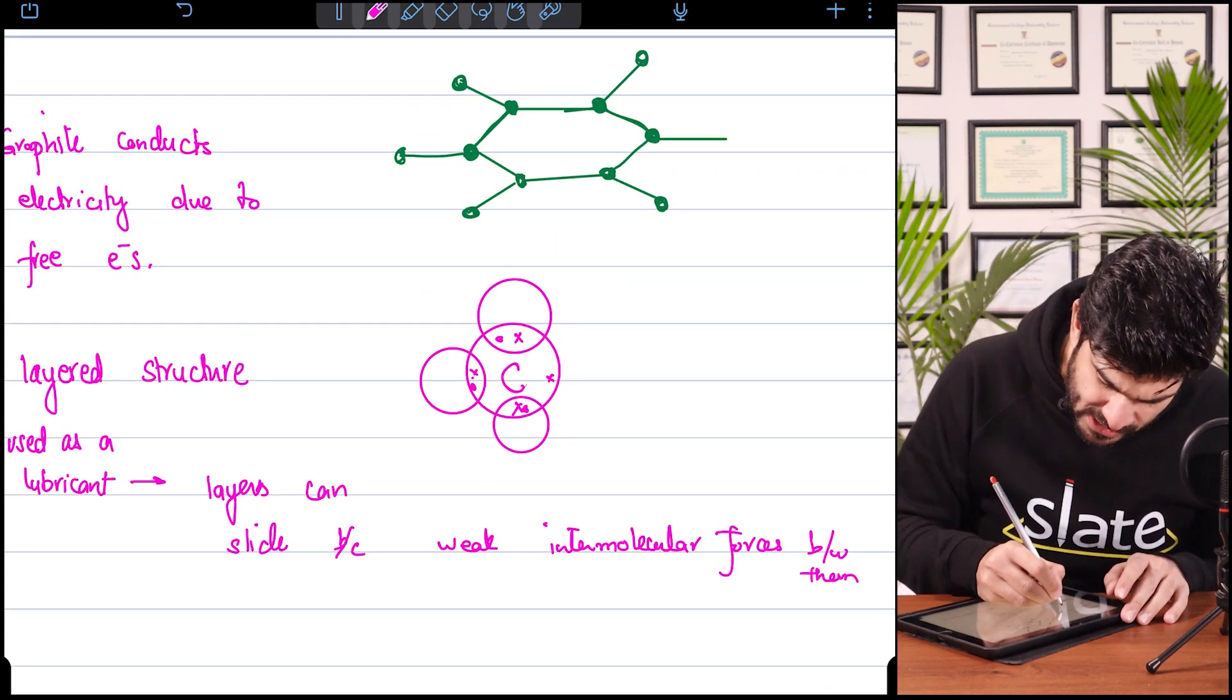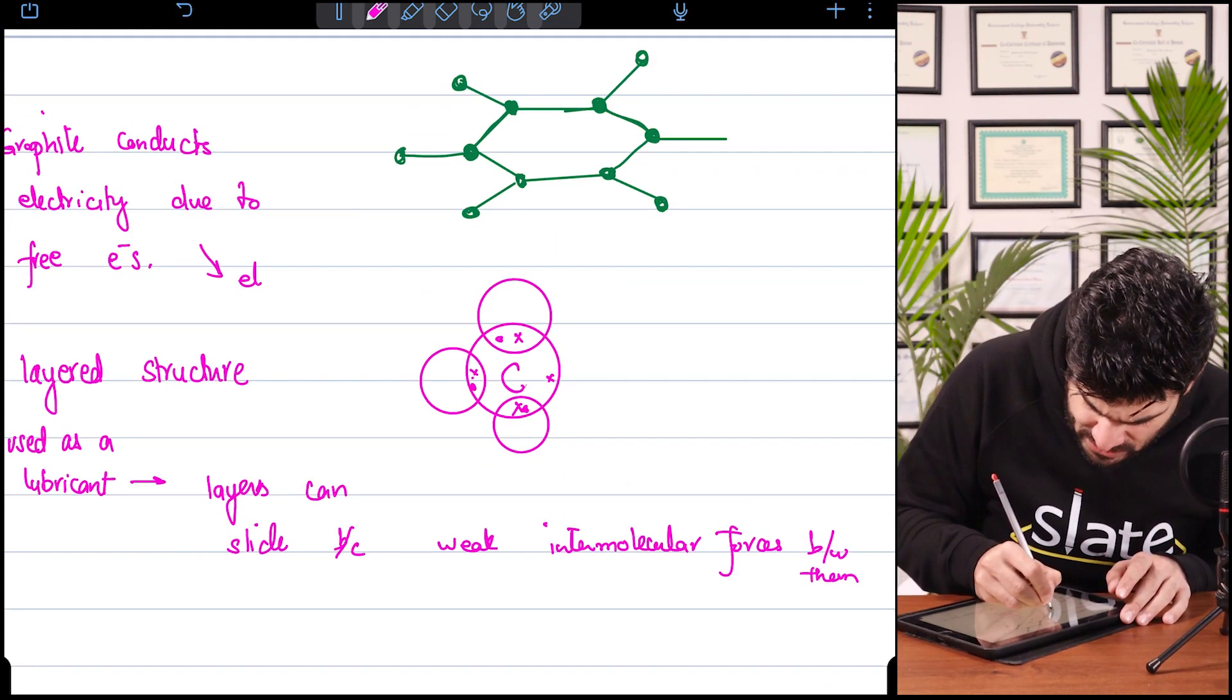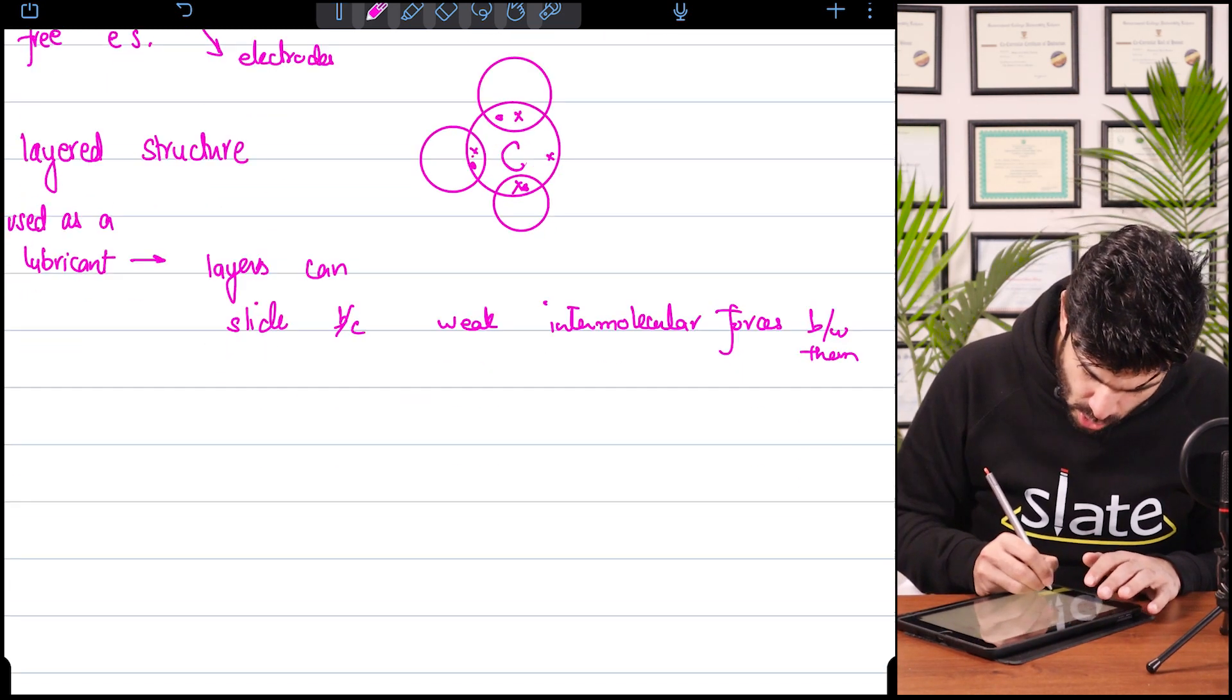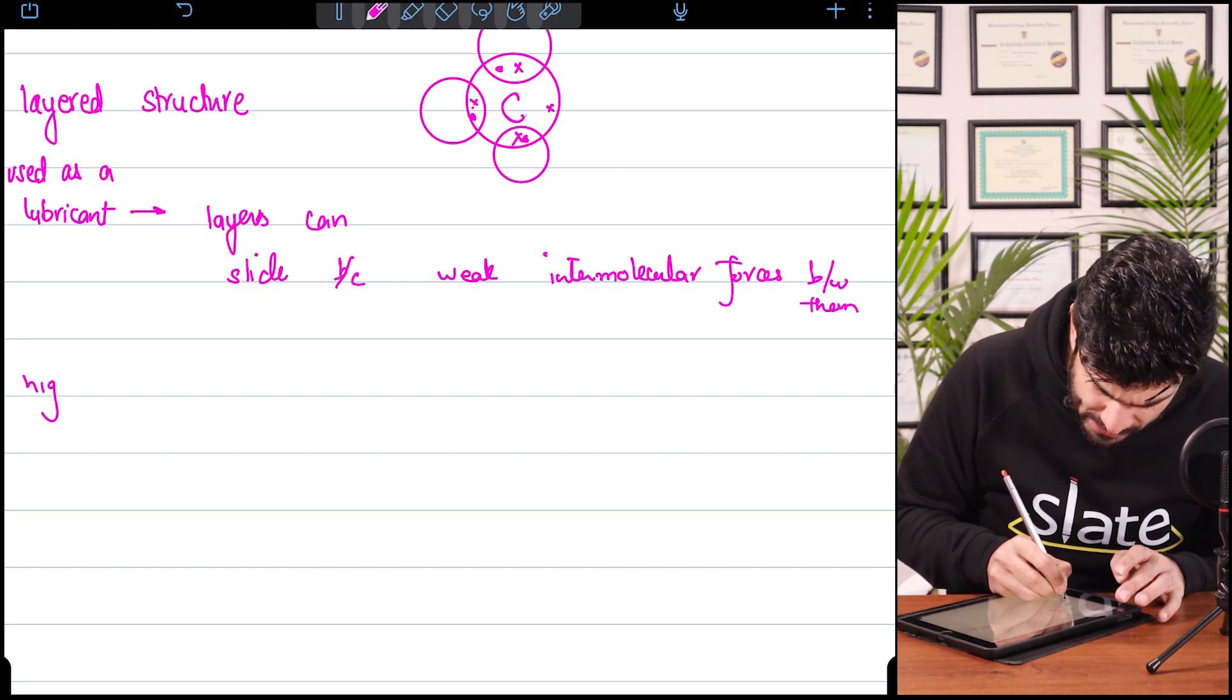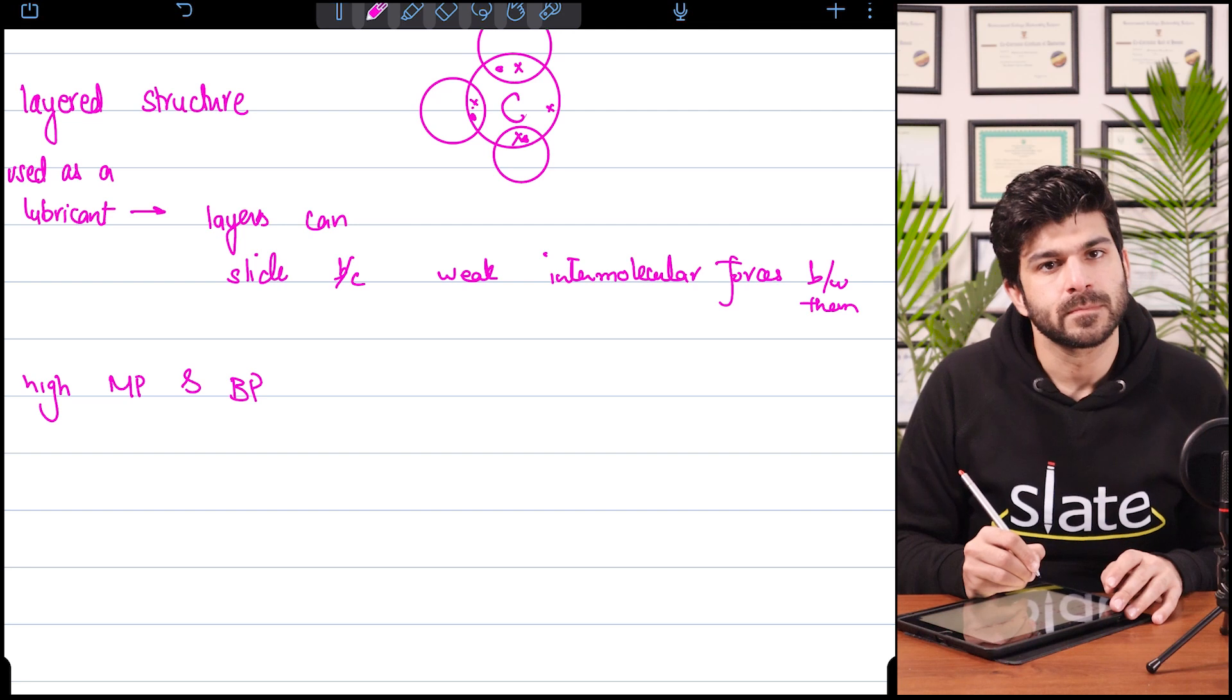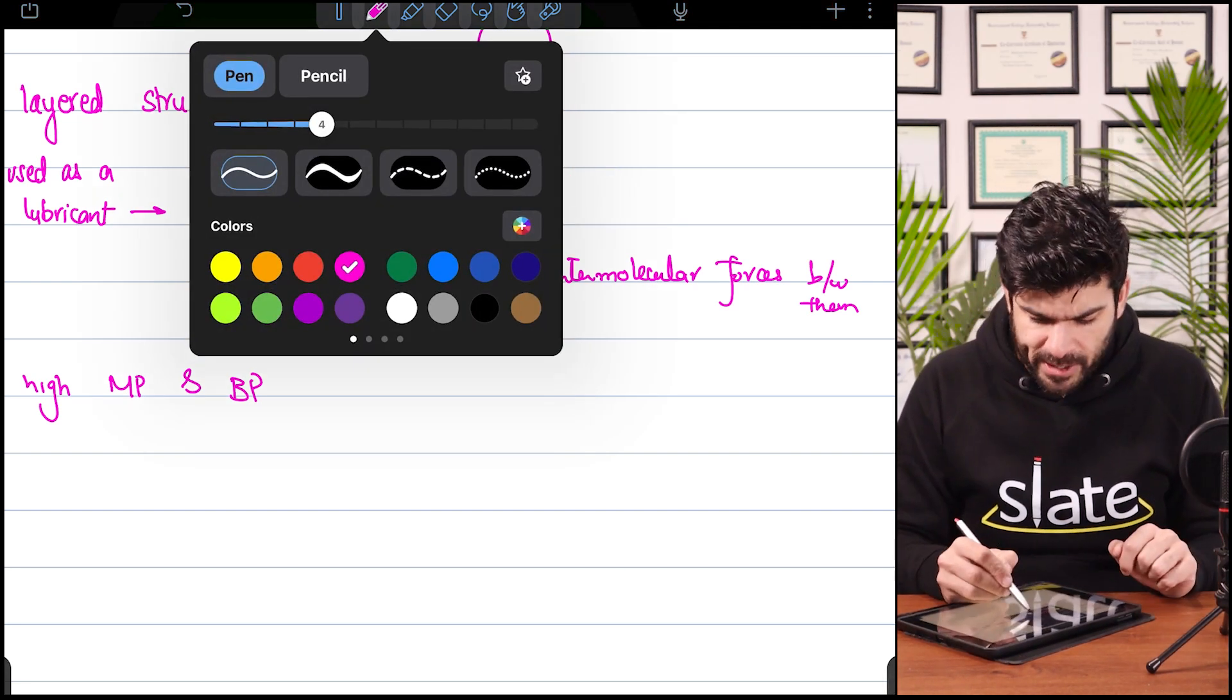That's one property of graphite. When it conducts electricity, it is used as electrodes as well. And then it has also a high melting and boiling point because it's a solid. That's what we know about graphite.